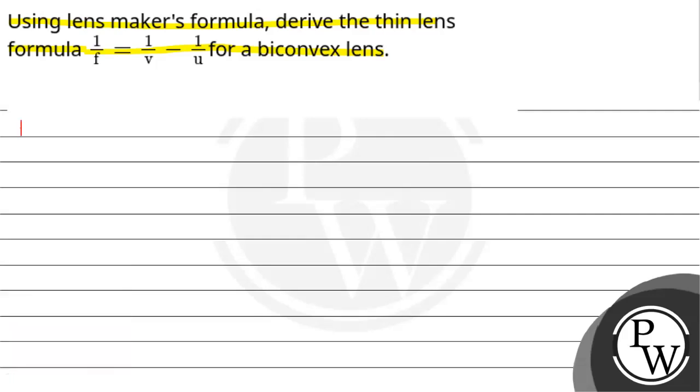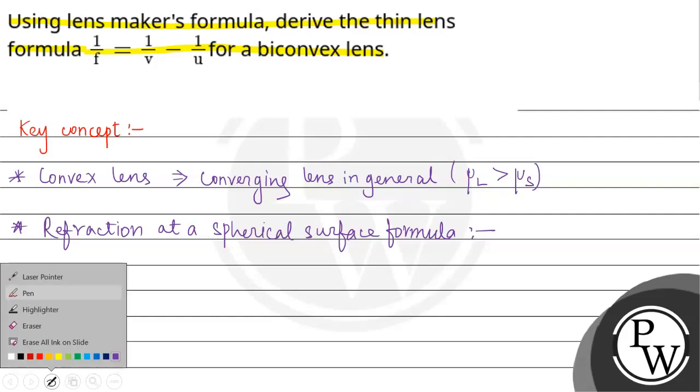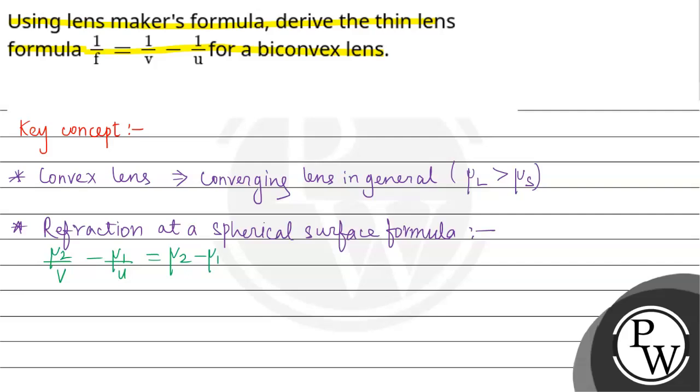Let us have the key concepts for the given question. First key concept is that a convex lens or converging lens, when refractive index of lens is greater than refractive index of surroundings. Next concept is that refraction at a spherical surface formula is used. That is μ2/v - μ1/u = (μ2 - μ1)/r.